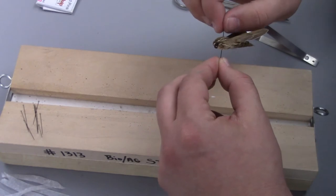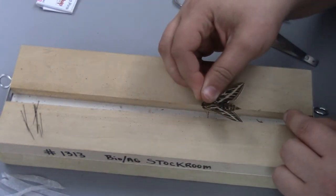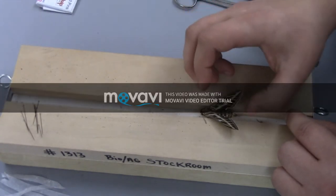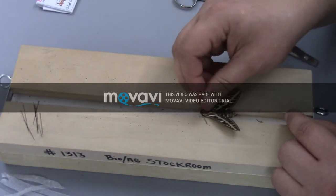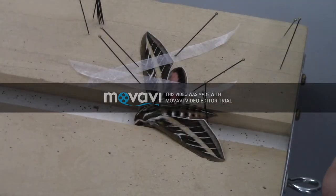Take your moth or butterfly and carefully place it on the pinning board. Use two pins to hold down the abdomen.